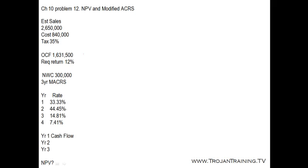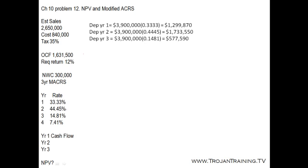First, we will calculate the annual depreciation for the equipment necessary for the project. The depreciation amount each year will be calculated using the rates based on the useful life of three years. We take the $3.9 million original cost of the asset: for the first year, times 33.33%; for the second year, the depreciation rate is 44.45%; and for the third year, 14.81%. And we find the depreciation amounts for all three years.